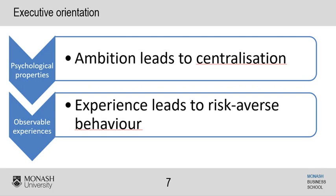When understanding strategic choices and organizational performance, a key part of what we need to look at is executive orientation, which has two aspects. The first is the psychological properties. For example, if a CEO likes to know and control everything, they're more likely to centralize services within the organization so it runs through one central point rather than having multiple dispersed groups. This can really affect what the top executive's preferences and values are - even their ego and sense of achievement can drive how an organization is structured and ultimately how it performs.